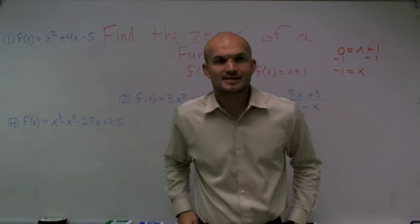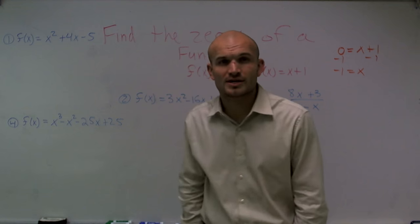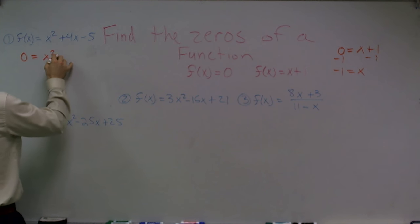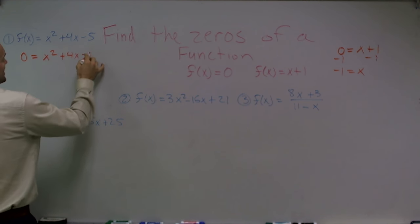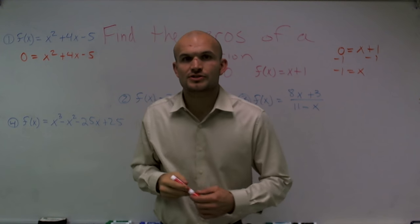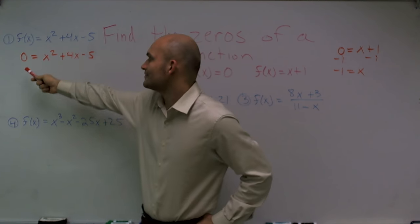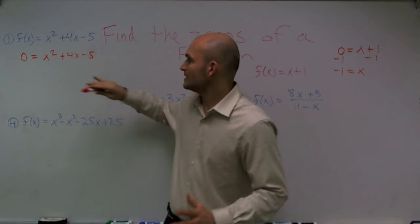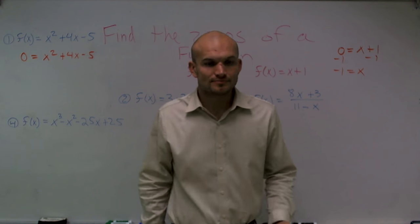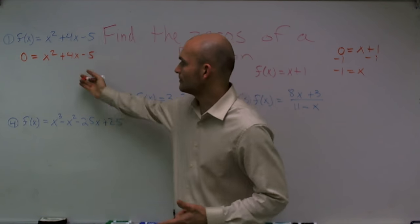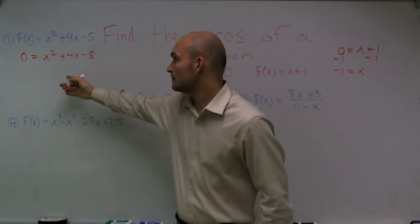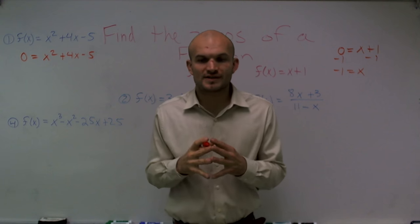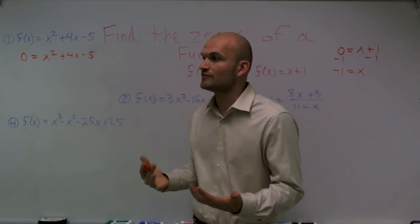Let's look at question number 1: f of x equals x squared plus 4x minus 5. If I plug in 0 for f of x, I have 0 equals x squared plus 4x minus 5. A big problem students want to do is just solve for x — put the 5 over, put the 4 over, square root it. When we have a quadratic with an x squared and an x, we can't just solve for x. We're going to have to factor it.